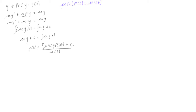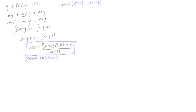Let's circle this and label it as the general solution. This is in terms of mu of t, but we still don't really know what mu of t is. Even though this is general — not using specific numbers — we can find out a little bit more about mu of t.